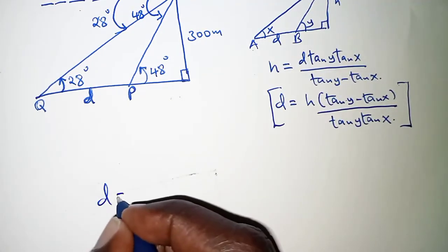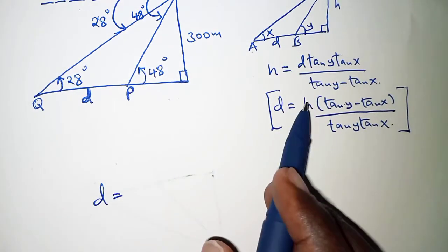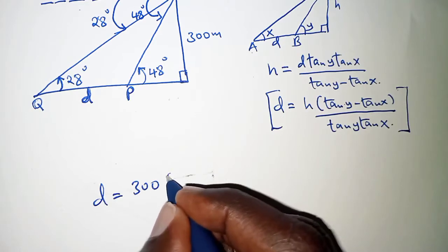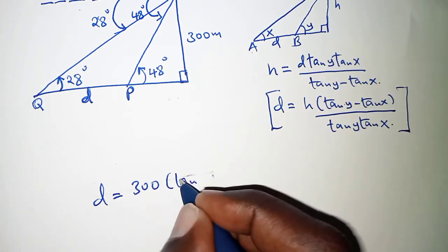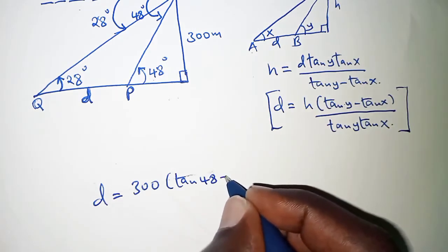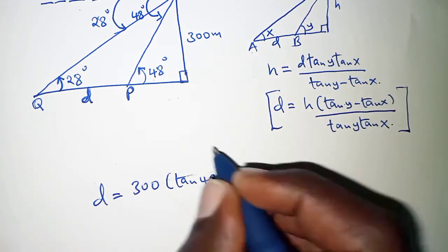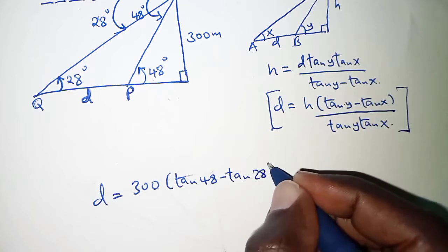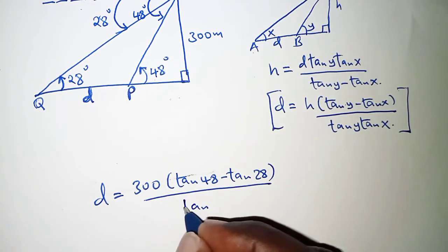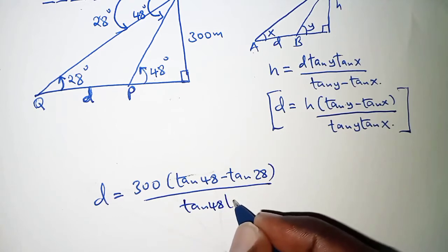So, we have D is equal to H which is the height given as 300 times tan of angle Y and Y is 48 minus tan X and X is 28. And then we will divide that by tan 48 times tan X.